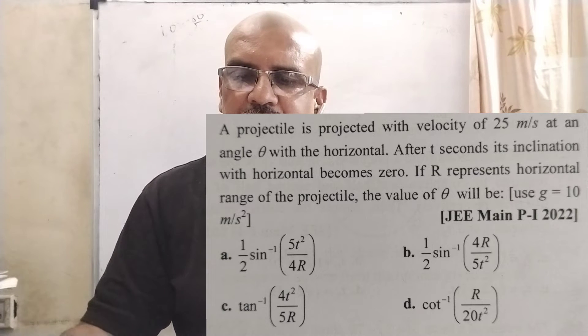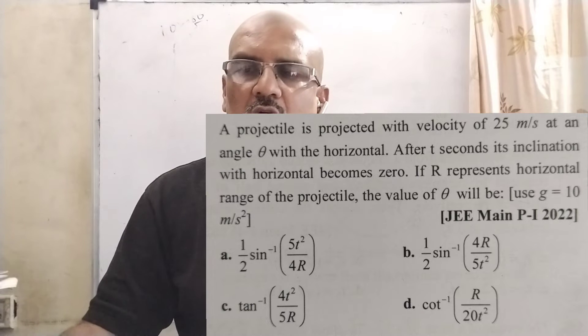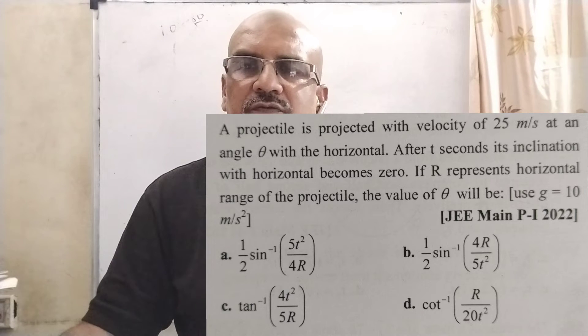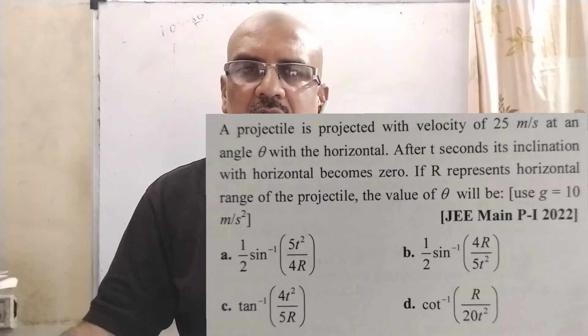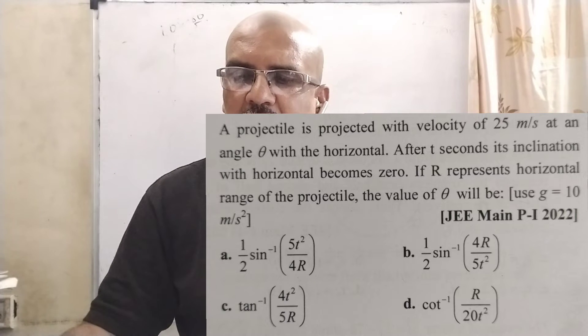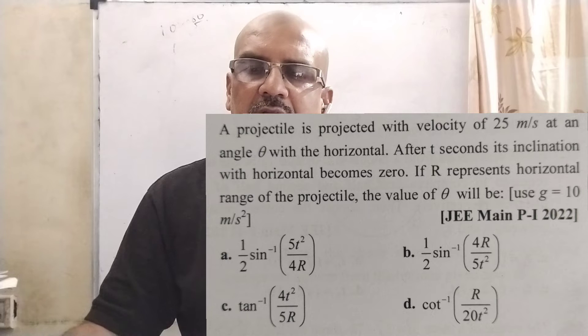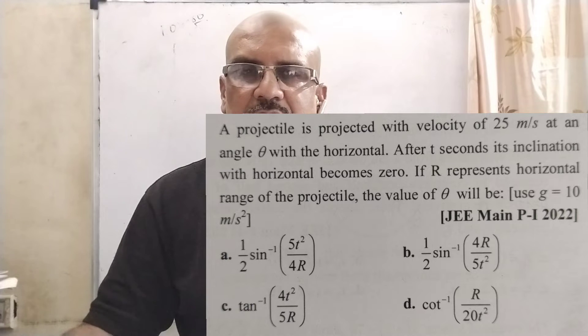Here we have given four options. A: 1/2 sin inverse 5t²/4R. Option B: 1/2 sin inverse 4R/5t². Option C: tan inverse 4t²/5R. Option D: cot inverse R/20t². Here we can take g equal to 10 m/s².